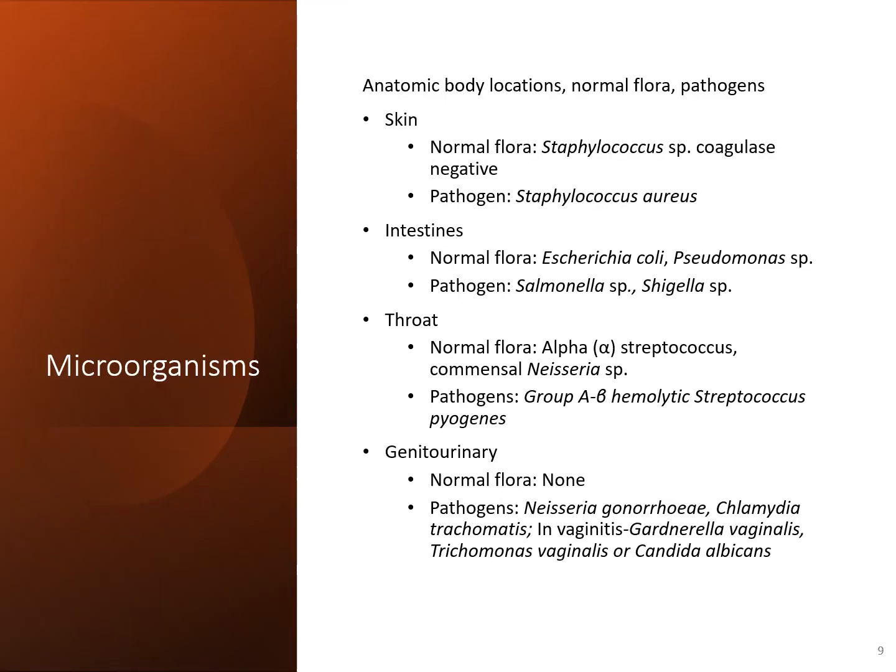Here we have some examples of normal and pathogenic flora with different body sites. Within the intestines, normal flora would be E. coli and Pseudomonas. However, you can be affected with a pathogen like Salmonella or Shigella. E. coli or Pseudomonas can be normal flora in the intestines, but because of the anatomy of the body, they can also invade the urinary tract — where they would be considered a pathogen.